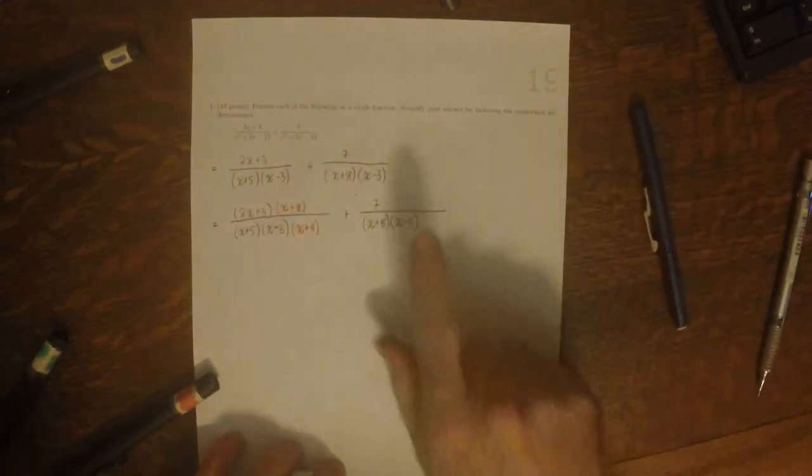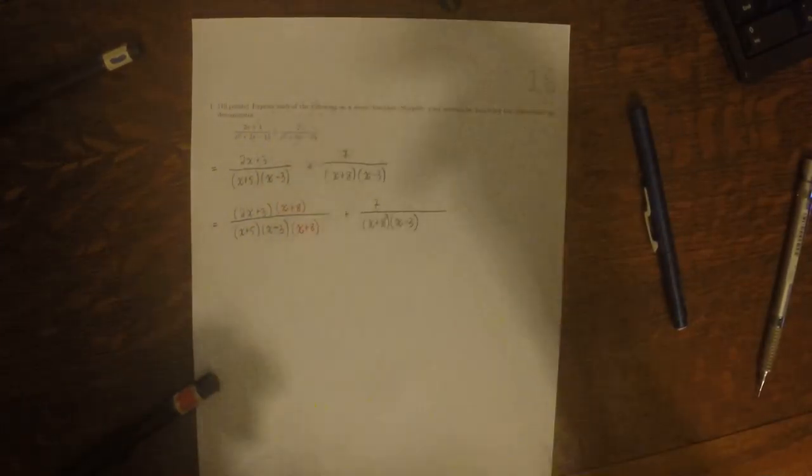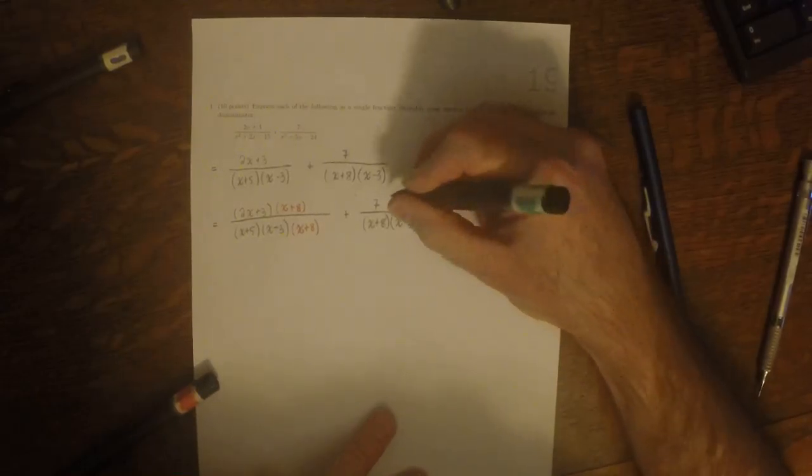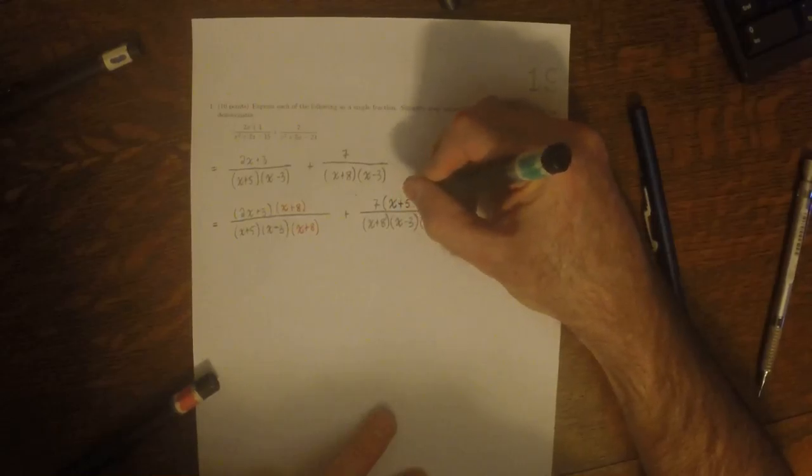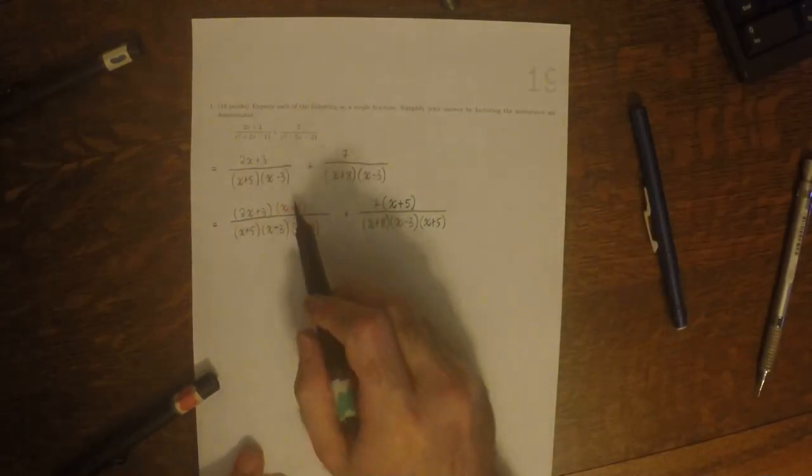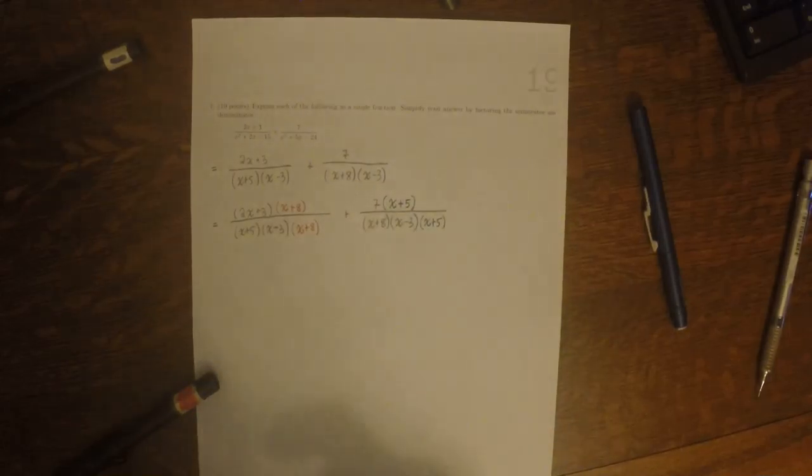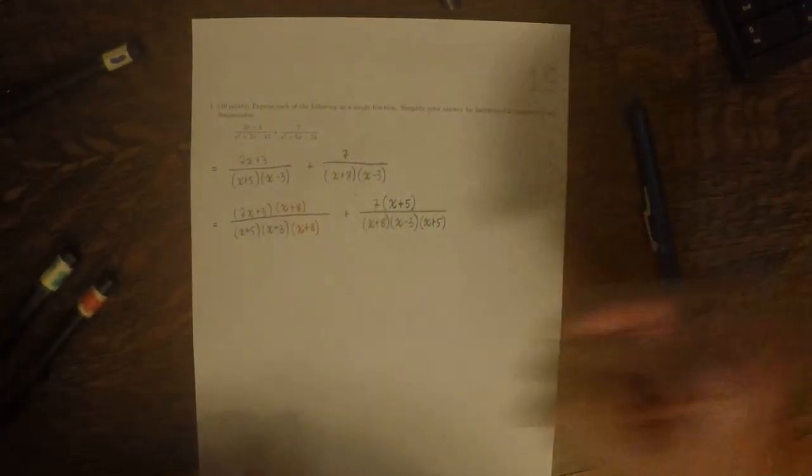And then this one was missing an x plus 5, so x plus 5 x plus 5. So the red over red is 1 and the green over green is 1. So now multiply and collect.